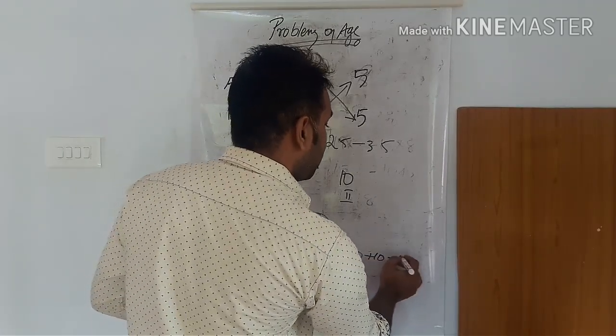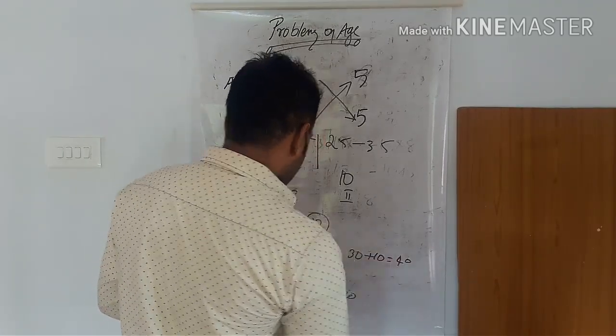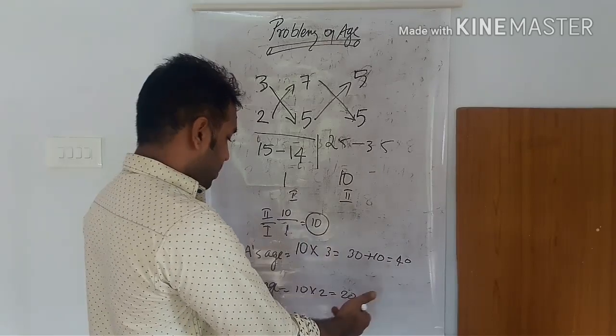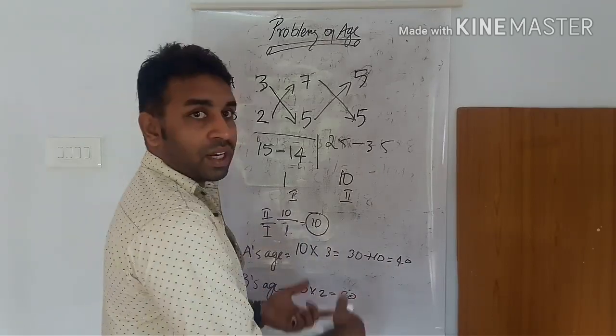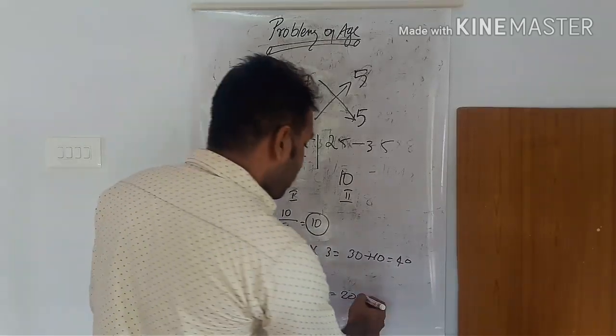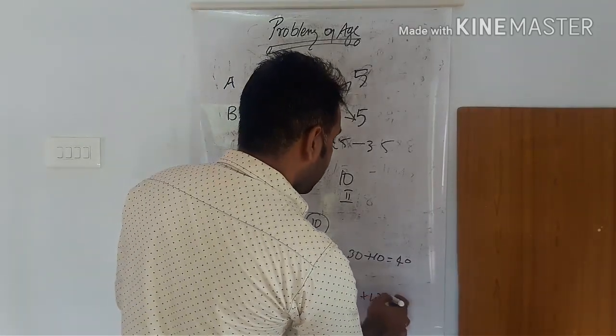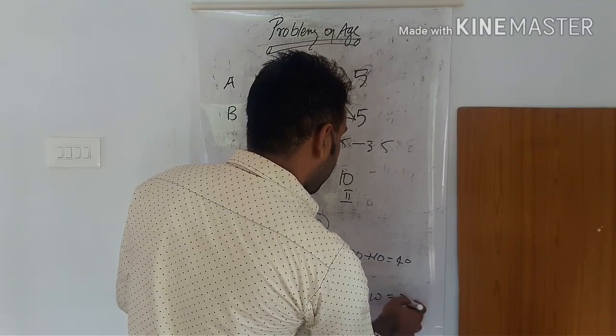After adding 5 years: A's age will be 30 plus 10, which is equal to 40. Then B's age is equal to 20 plus 10, which is equal to 30.